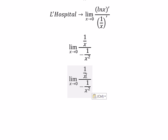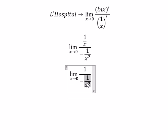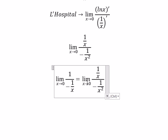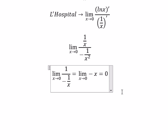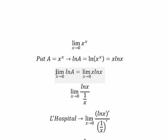So we simplify: 1 over x divided by negative 1 over x squared gives negative x. And we put zero in here, you get zero. So the limit of this one is zero.